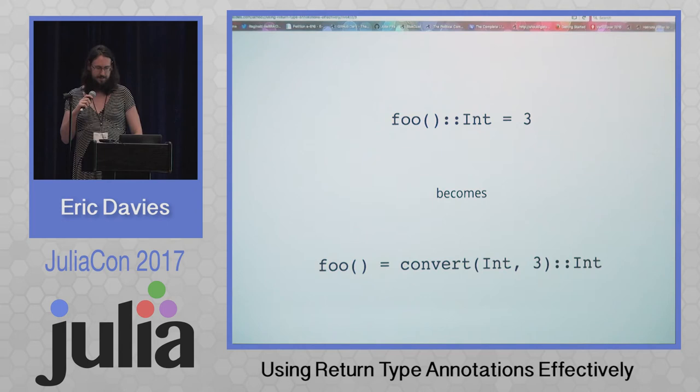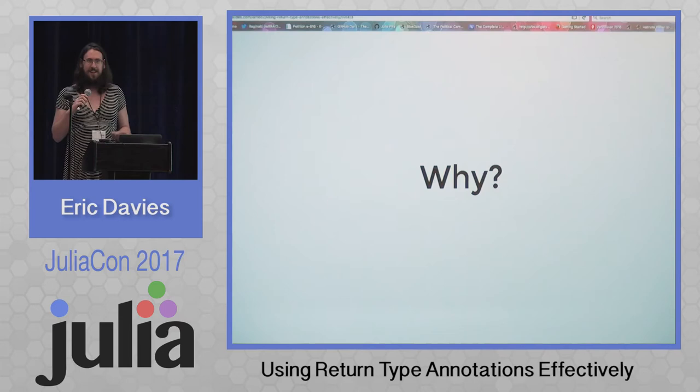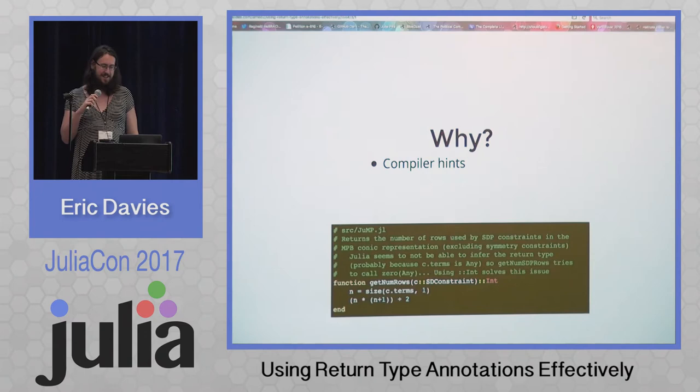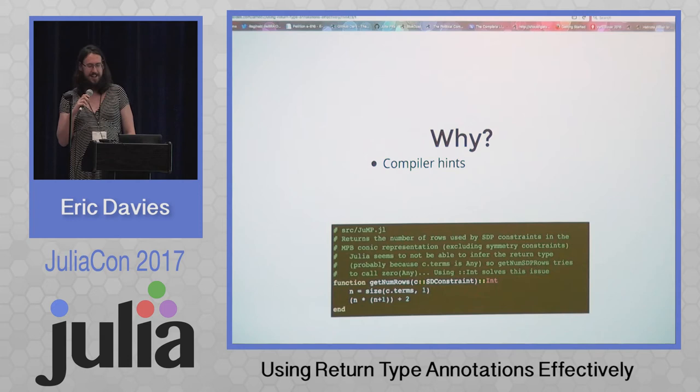We can talk about why you might want to use these. They're used in a few places right now in base and in a few packages, probably not as much as they could be. One reason is compiler hints — it's probably the most suitable use for this sort of thing. You can compensate for inference failures by adding annotations, like this example from JuMP. The comment talks about how it wasn't inferring the right type — they added a type annotation on the function and suddenly it knows it's an int returned now.